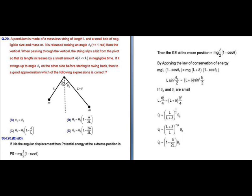For small θ₀ and θ₁, we simplify further and get θ₁ = (l/(l+δ))^(1/2) × θ₀, which can also be written as θ₁ = ((l+δ)/l)^(−1/2) × θ₀. Since δ is very small compared to l, this simplifies to θ₁ = (1 − δ/2l) × θ₀. The correct option is B.